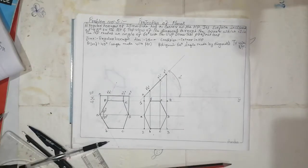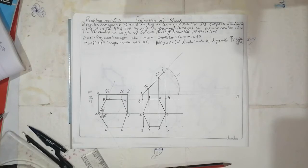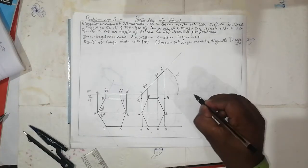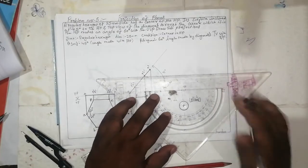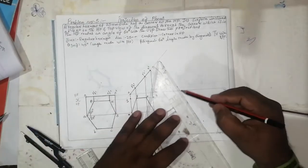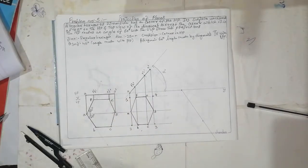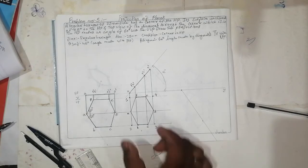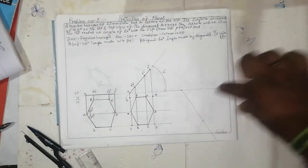Now the question has given the beta diagonal as 60 degrees. So draw the angle of beta — make one point here, draw 60 degrees, and join this line. I've taken the rectangle piece like this.